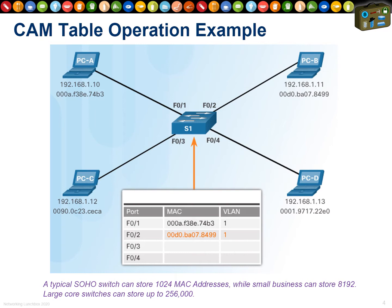The CAM table has a fixed size. A cheap D-Link switch might only have a CAM table of 1,024, meaning it can only learn and remember 1,024 MAC addresses. Most classroom switches have a CAM table of 8,000. Big enterprise switches go to 256,000 and higher. This is important because we're going to look at ways of filling the CAM table to completely cripple your switch.